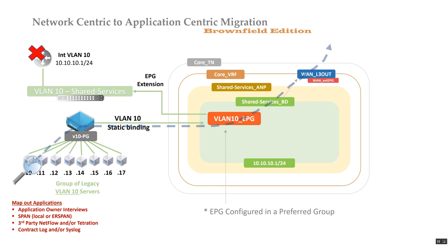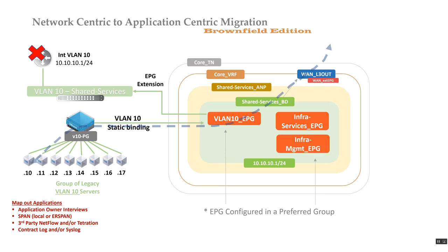At this point I've mapped out my applications using tools and strategies to understand what's happening in VLAN 10 — which VMs are doing what. I now understand there are infrastructure services and infrastructure management endpoints, like NetFlow collectors or syslog servers. So I start modeling EPGs based on what I discovered.